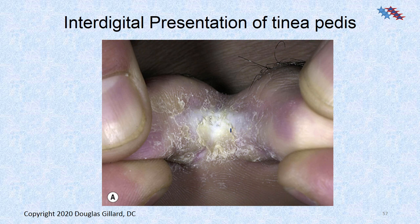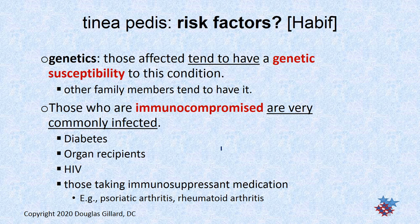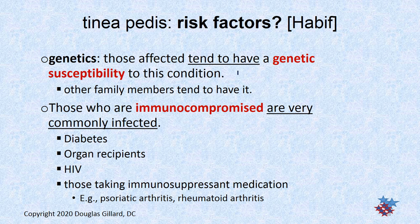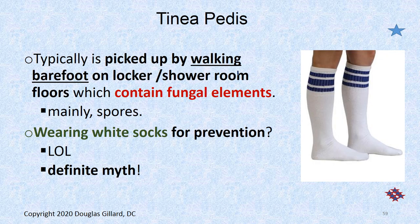There's classic interdigital tinea pedis — got that hyperkeratosis again. T. rubrum stimulates the stratum basale to overproduce cells and you start getting that hyperkeratosis. Risk factors: immunocompromised again — organ transplant recipients, HIV, diabetes, those on immunosuppressants for psoriatic arthritis or rheumatoid arthritis. There's also a genetic susceptibility to these — if mom and dad have it, you have a higher chance of getting it.